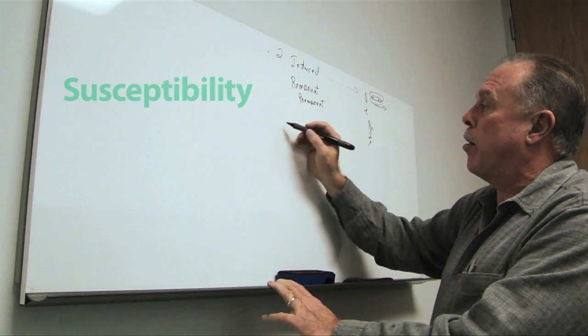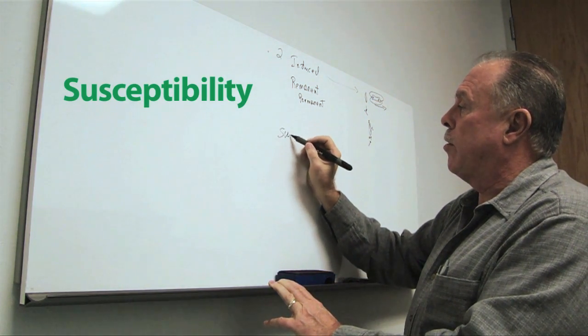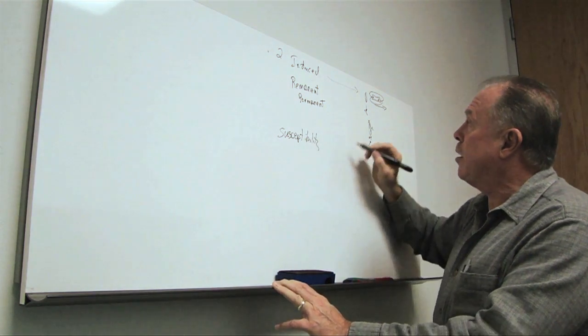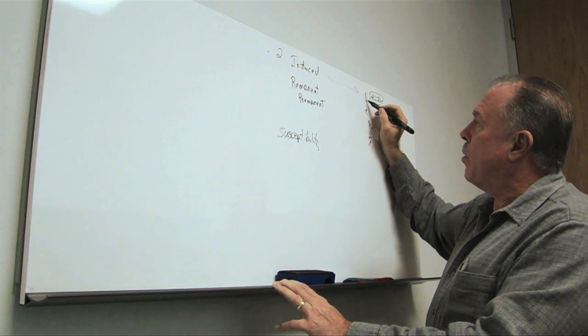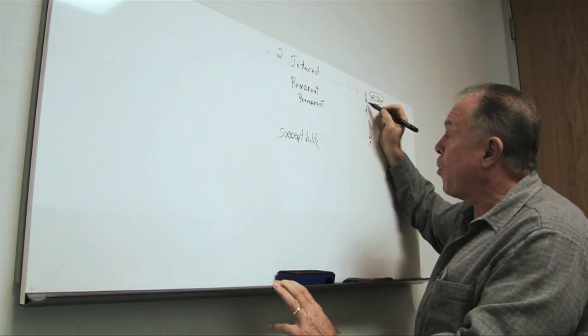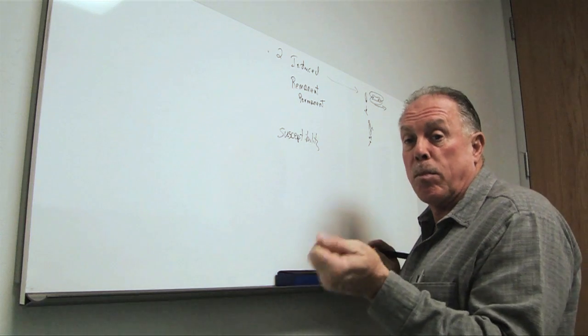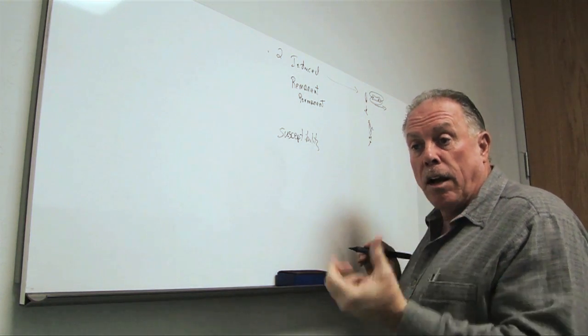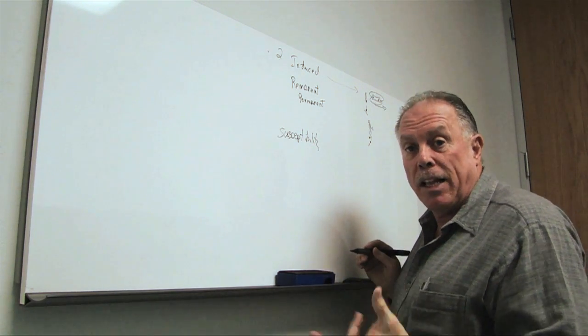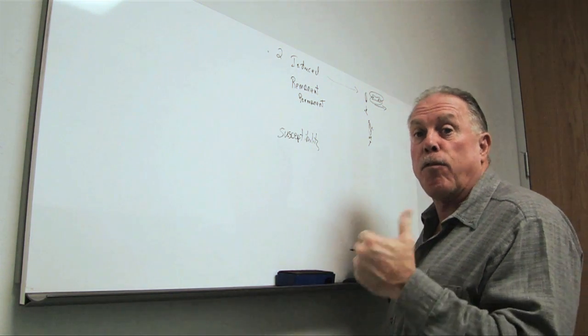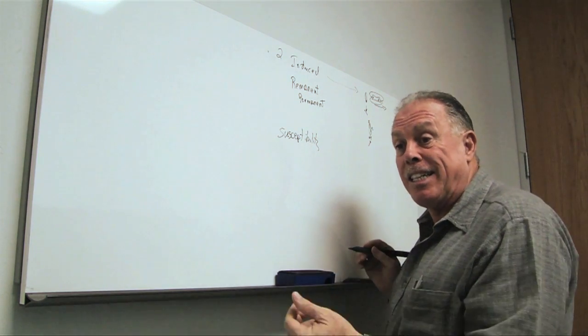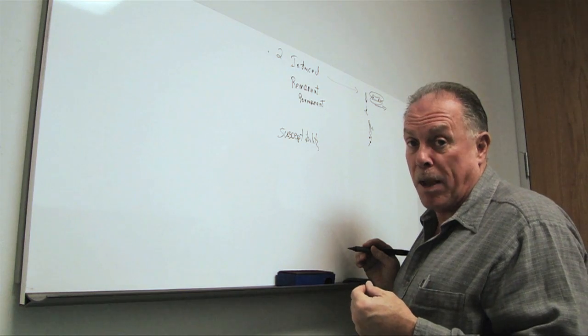The next term we want to talk about is susceptibility. And susceptibility simply means how susceptible is this paper clip to being magnetized. So it's a property of the steel, if you will. It's a property of the material in that items with high susceptibility are more easily magnetized or pick up a magnetic field. Therefore, they distort the Earth's magnetic field more and we can see them easier with the magnetometer.